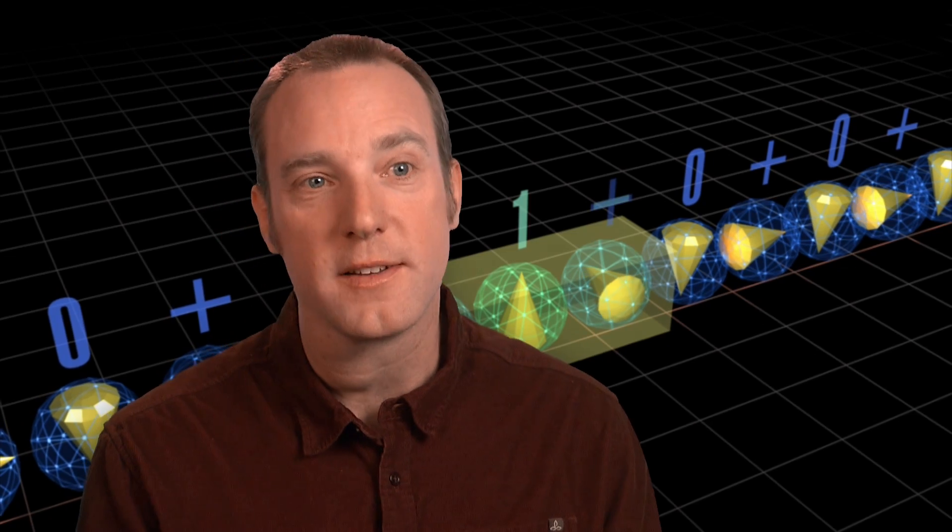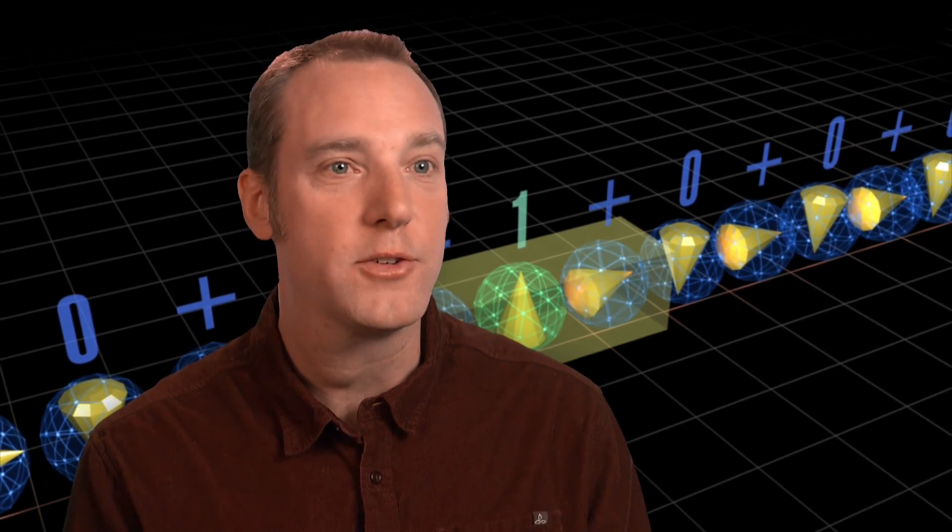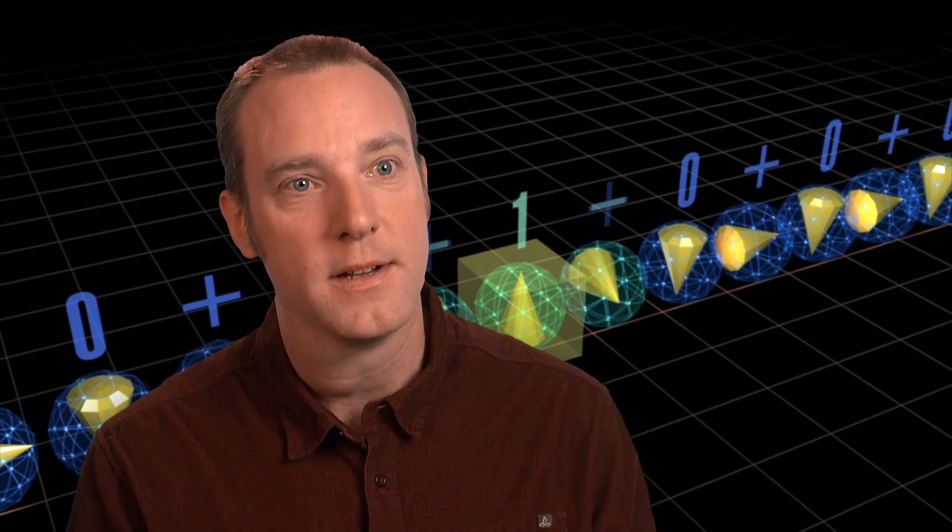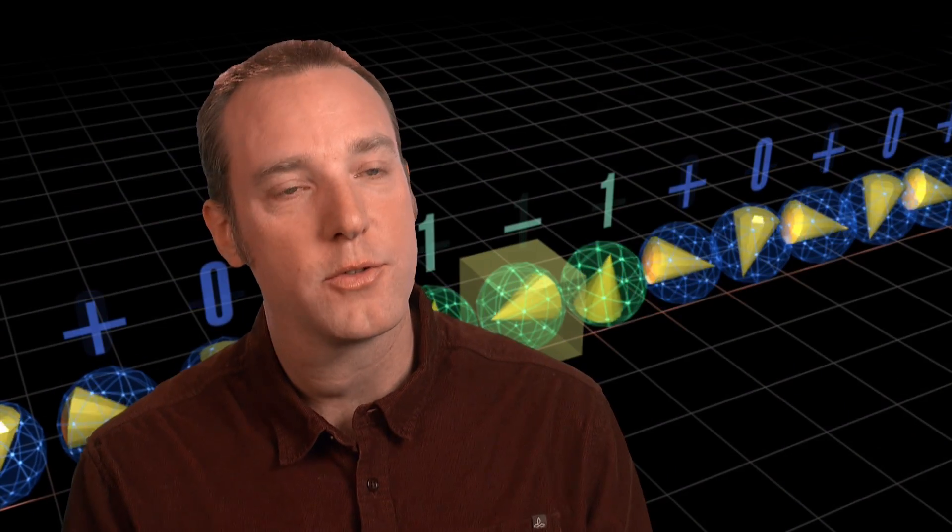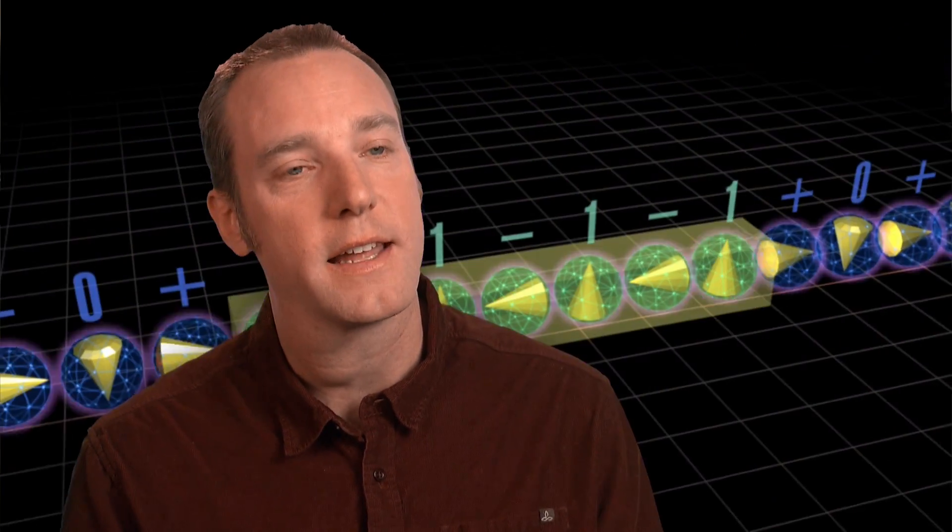If a particle can be in two places at once, or it can be doing two different things at the same time, that can be useful if you are talking about information, because it means that if you want to calculate something, and you are trying to calculate something with numbers, your little registers of those numbers, those little memory elements that are usually called bits...